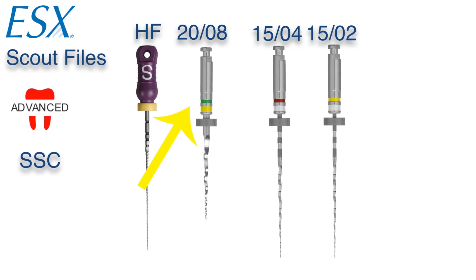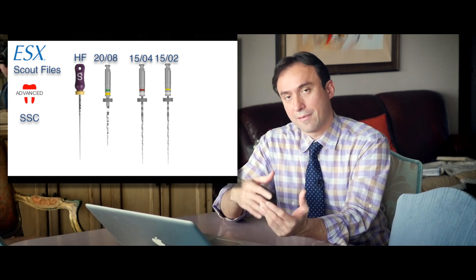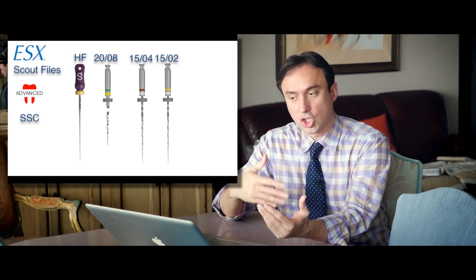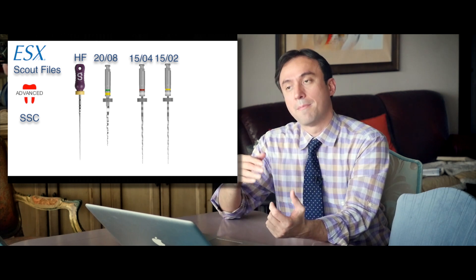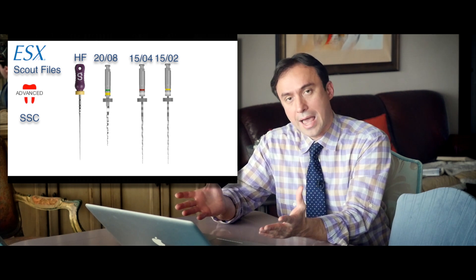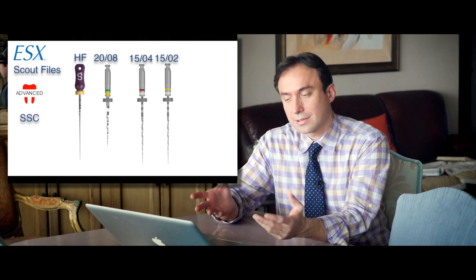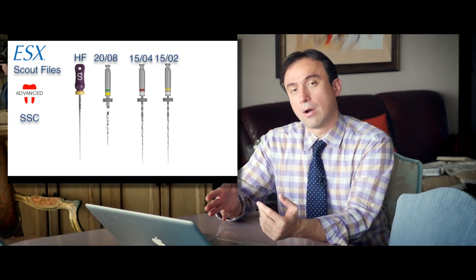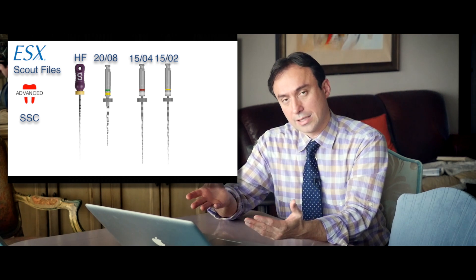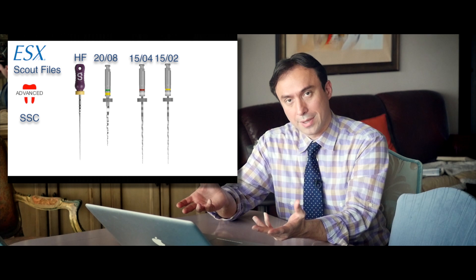And you would use an orifice opener. First, obviously, use a couple of hand files to make sure you have a patent canal. The orifice opener doesn't make a canal for you. All it does is it enlarges it laterally where the canal already exists. So you would also use the orifice opener in SSC motion, a single stroke and then wiping it.